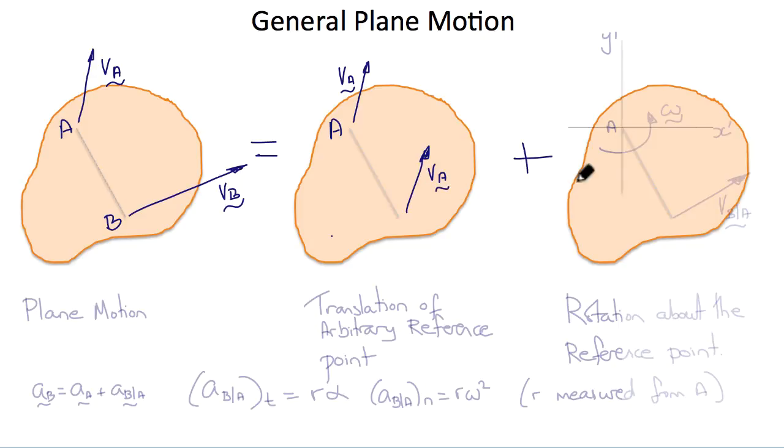Plus a rotation of B about A with an angular velocity omega. So this is the velocity of B relative to A, which is equivalent to angular velocity omega referenced to a new reference frame X prime Y prime that has A as its origin.